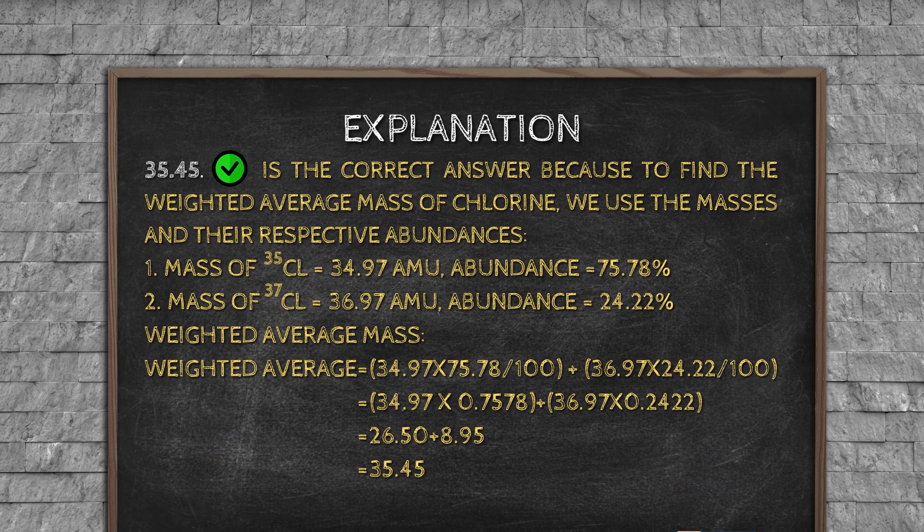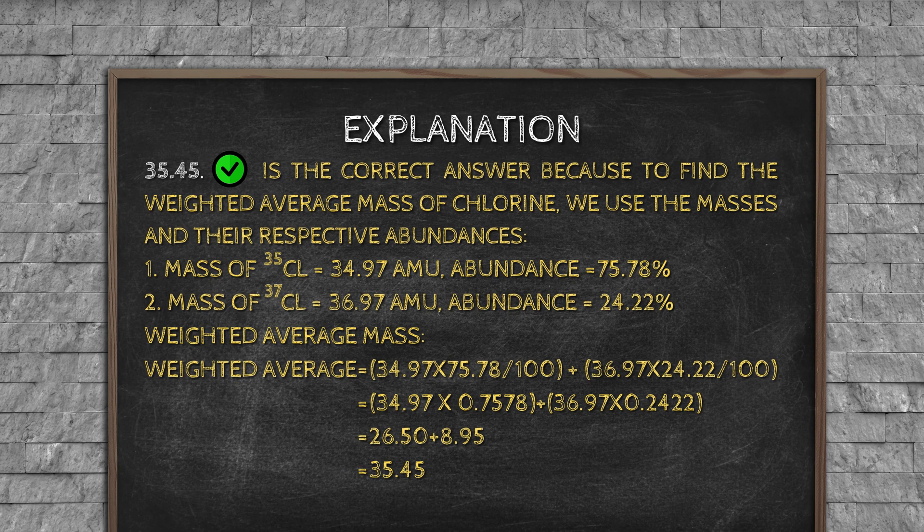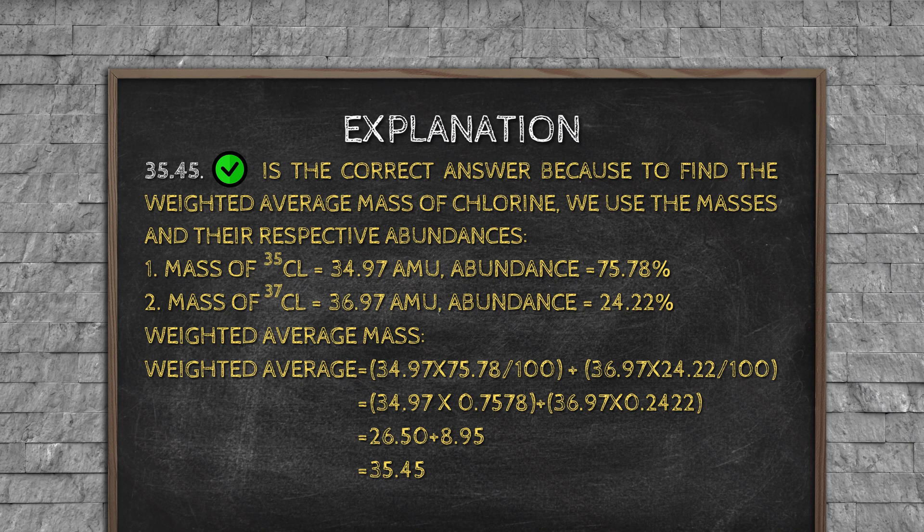Explanation: 35.45 is the correct answer because, to find the weighted average mass of chlorine, we use the masses and their respective abundances. 1. Mass of 35Cl equals 34.97 AMU, abundance equals 75.78%. 2. Mass of 37Cl equals 36.97 AMU, abundance equals 24.22%. Weighted average mass: weighted average equals 34.97 times 75.78 divided by 100 plus 36.97 times 24.22 divided by 100 equals 26.50 plus 8.95 equals 35.45.